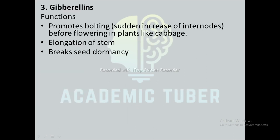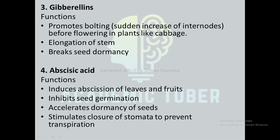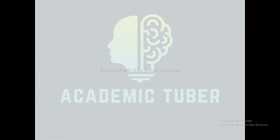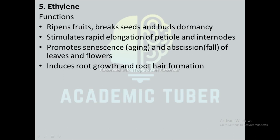Functions of cytokinins: they support cytokinesis, promote fruit growth, support apical dominance induced by auxin, and stimulate the formation of chloroplasts. Functions of gibberellins: they promote bolting before flowering in plants like cabbage, elongation of the stem, and break seed dormancy. Functions of abscisic acid: they induce abscission of leaves and fruits, inhibit seed germination, accelerate dormancy of seeds, and stimulate closure of stomata to prevent transpiration. Functions of ethylene: it drives fruit ripening, breaks seed and bud dormancy, stimulates rapid elongation of the petiole and internodes, promotes senescence and abscission of leaves and flowers, and induces root growth and root hair formation.